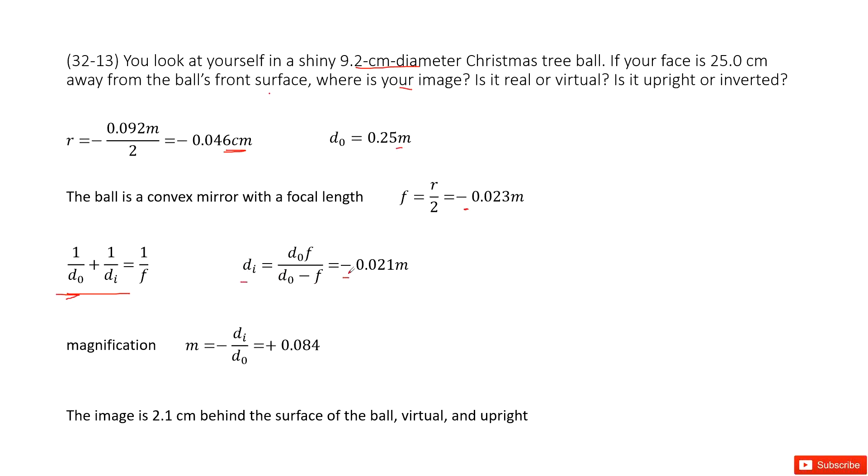Now d i is given. This is negative 0.021 meter. Now is it real or virtual? Is this a real image or virtual image? And of course, it's virtual. This is a negative sign, right?